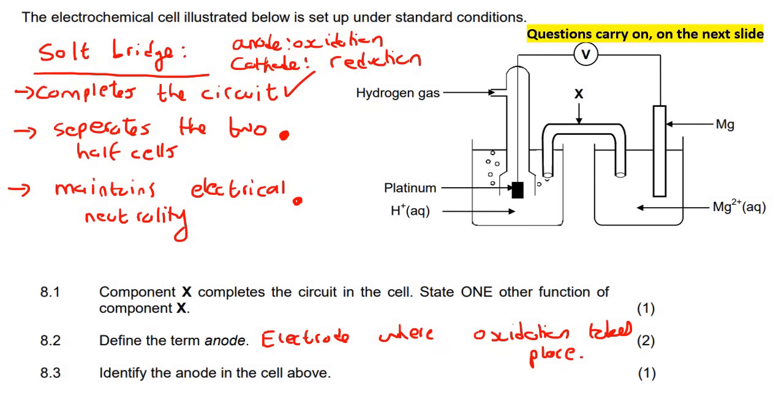Then it says identify the anode. Remember your anode is the place where oxidation happens. What we need to do is we need to grab our table. Some of you use table 4A, some use table 4B. I use table 4B, as I've mentioned in other videos, because most schools in South Africa use table 4B.